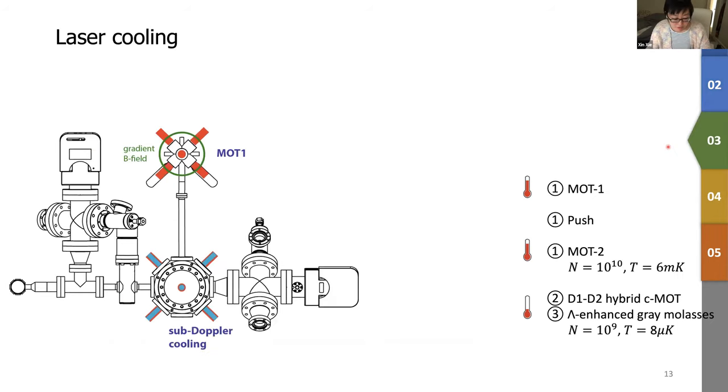So here's the top view of the assembly of the vacuum. So we have two MOT chambers. This first MOT is the source MOT, and the second MOT is for doing sub-Doppler cooling. And we use a push beam to push the atoms from the first MOT to the second MOT. And we also have a glass cell for doing science.